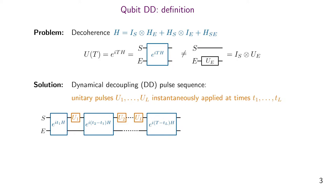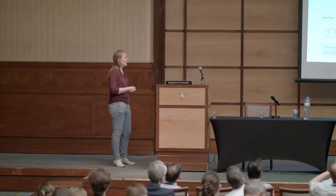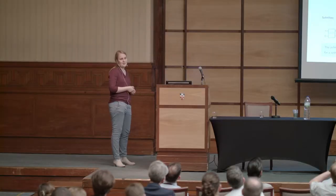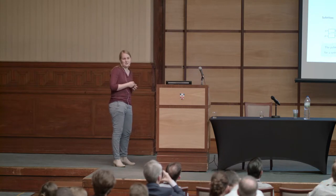We let evolve until time T2, apply the second pulse, and so on. Now we can ask: do we achieve an evolution which acts trivially on the system, at least approximately? By this we mean that the norm difference between these two unitaries is bounded by some term of T to the power n plus one. If we have a pulse sequence of pulses and times that achieves this equation up to some order n, we call it an nth-order dynamical decoupling scheme for the class of Hamiltonians for which this is achieved.